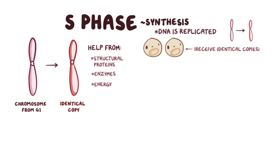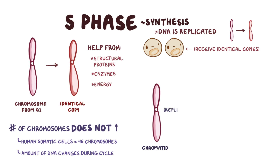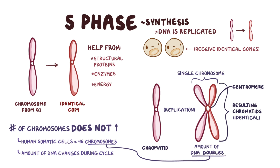Just to be clear, this doesn't mean that the number of chromosomes increases. Human somatic cells have 46 chromosomes throughout the cell cycle. The amount of DNA they have, though, and in turn their aspect, changes throughout the cell cycle. So each chromosome enters the S phase with a single copy of the genetic information, called a chromatid. During replication, each chromatid is copied and pasted, so the amount of DNA doubles up. The two resulting chromatids are identical to each other and to the original genetic template, and they join together in the center in a region called the centromere — but they still make up a single chromosome. So while the amount of genetic information is doubled, there are still 46 chromosomes that contain the genetic information.